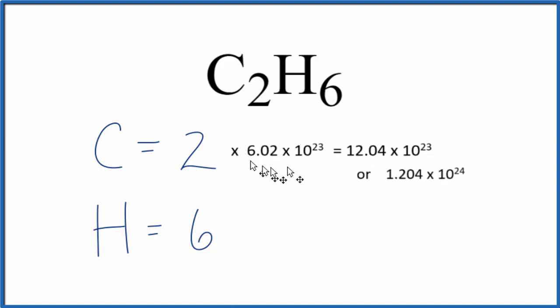2 times Avogadro's number gives you the number of carbon atoms in 1 mole of C2H6, ethane.